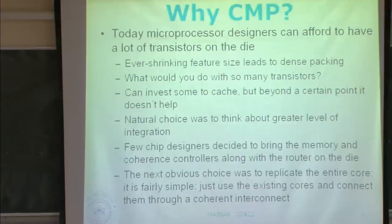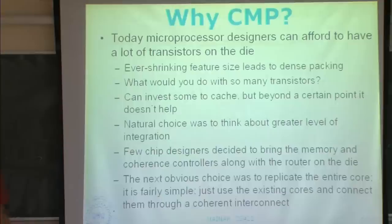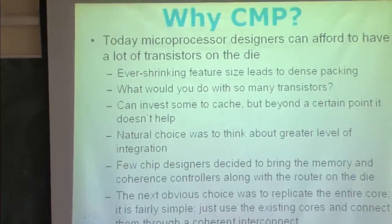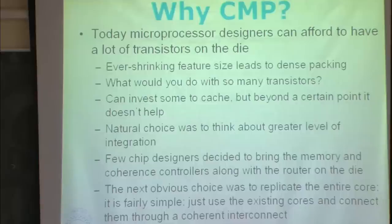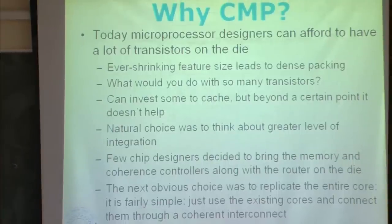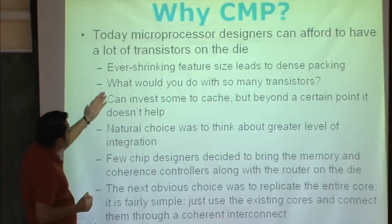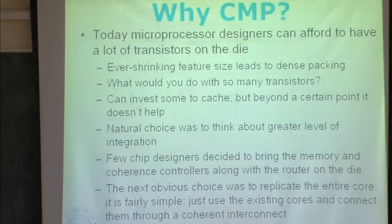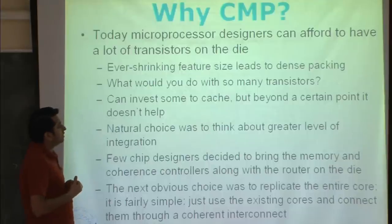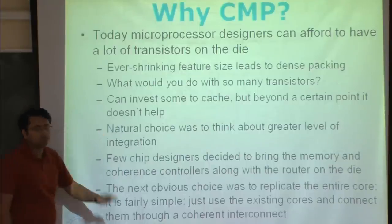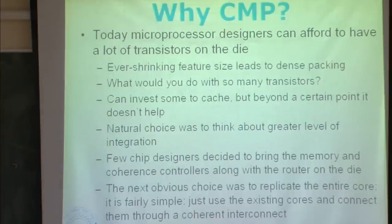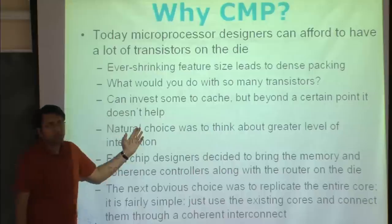Let's see what the design problems are and why we need CMP. One key reason is that microprocessor designers can afford to have a lot of transistors on a die — recent chips have more than a billion transistors. The ever-shrinking feature size leads to very dense packing, so you can pack a lot of transistors. One obvious solution industry used for some time was to invest those transistors in caches, which helps performance. But beyond a point, you don't get the return for what you're investing. Another rational choice was greater integration — bringing memory and coherence controllers along with the router onto the chip.